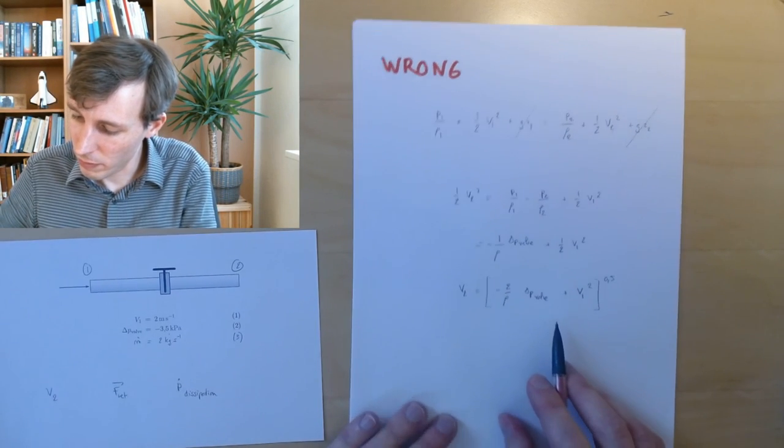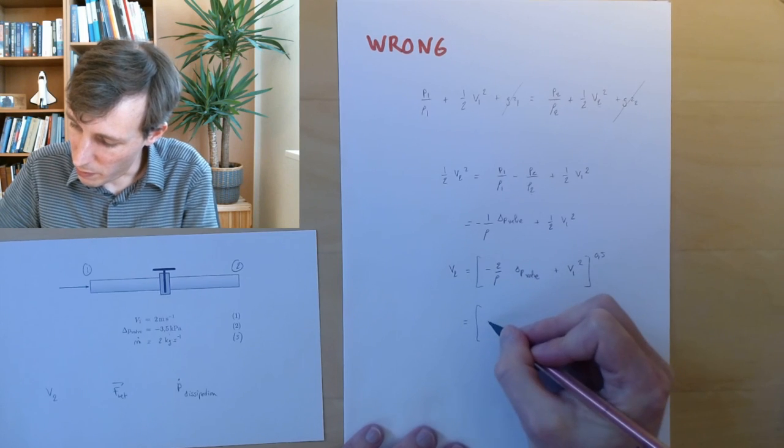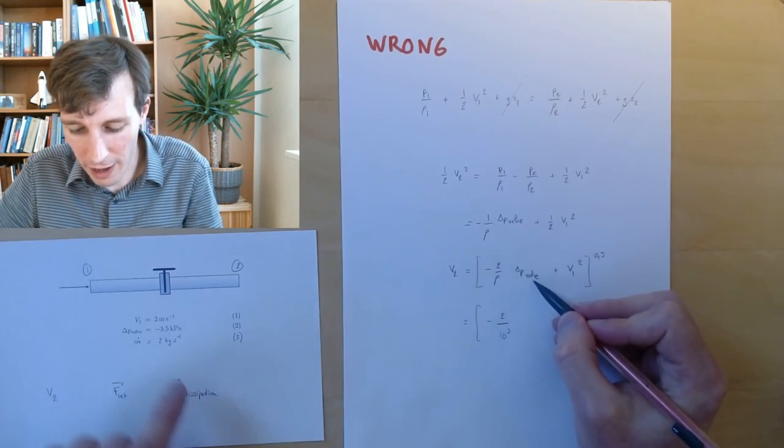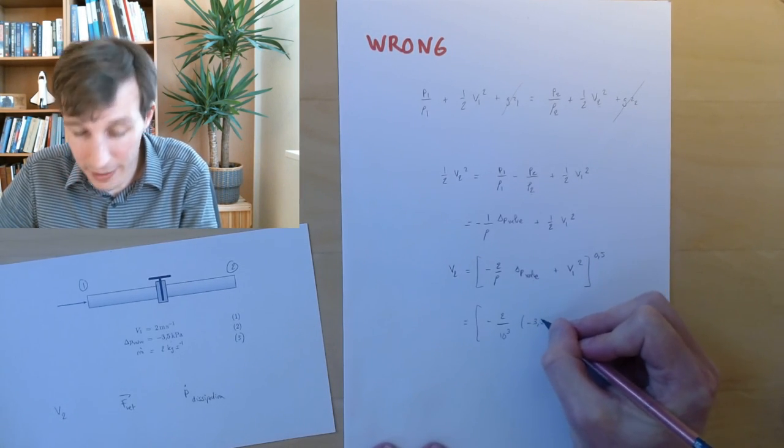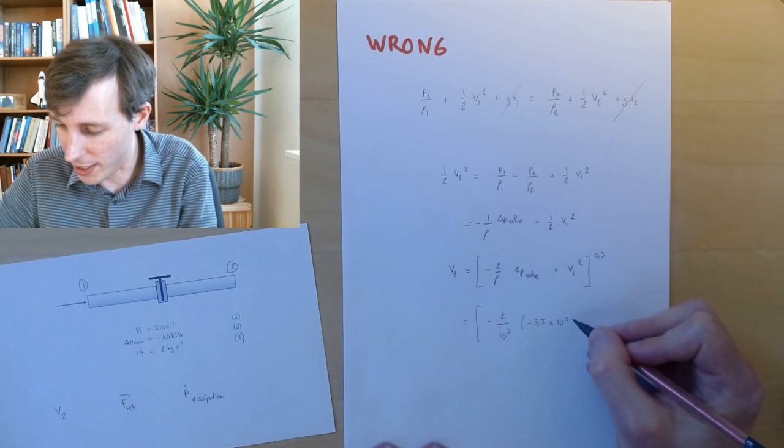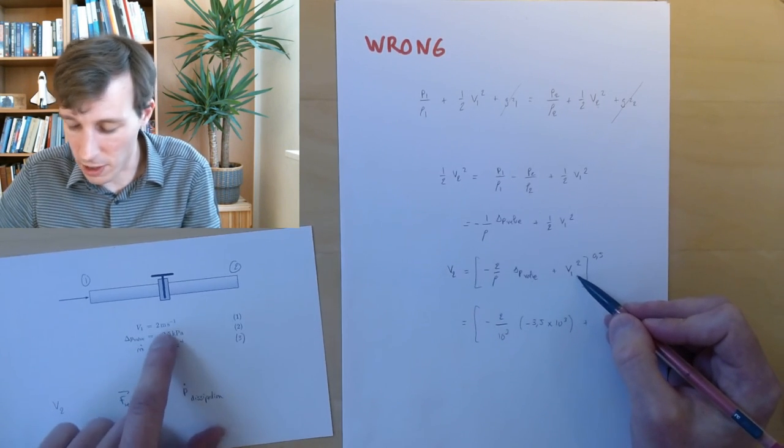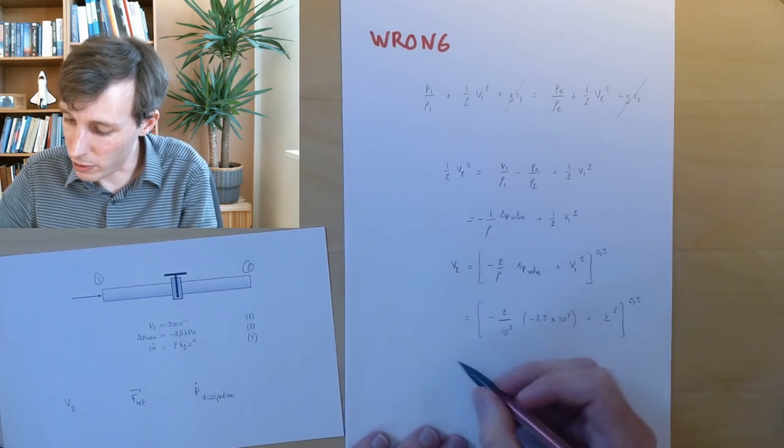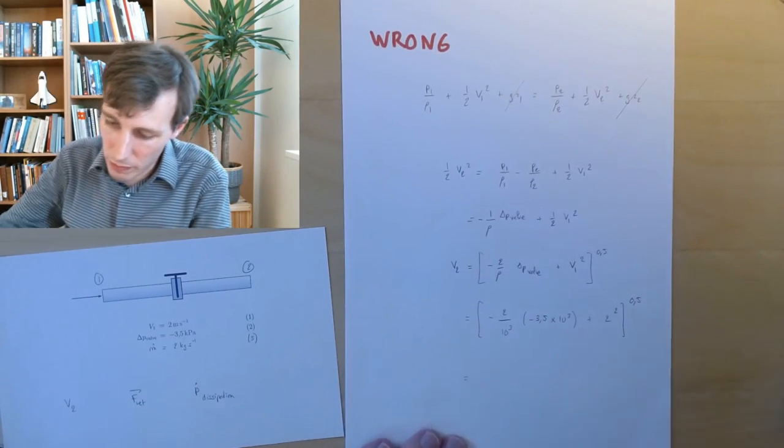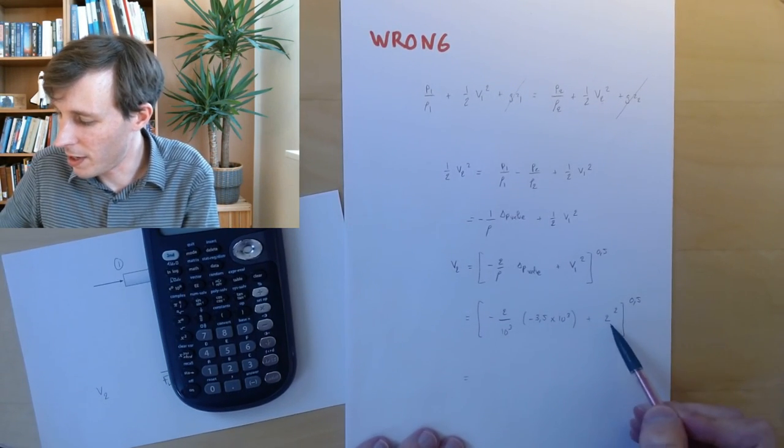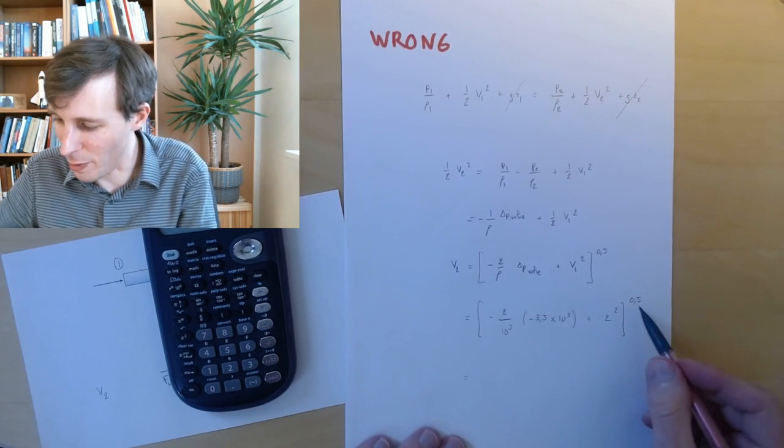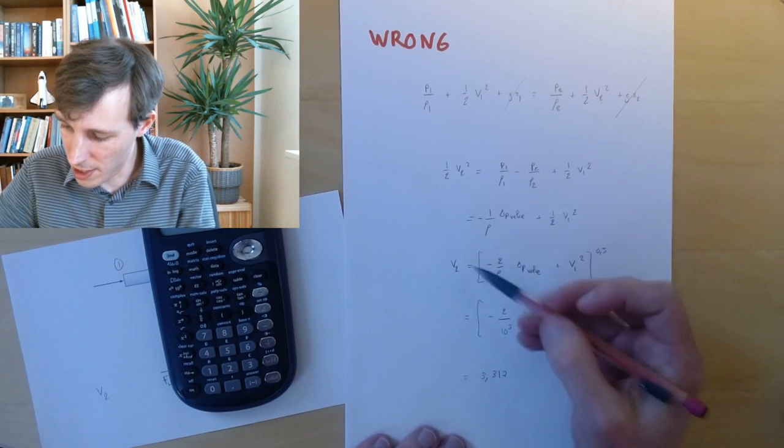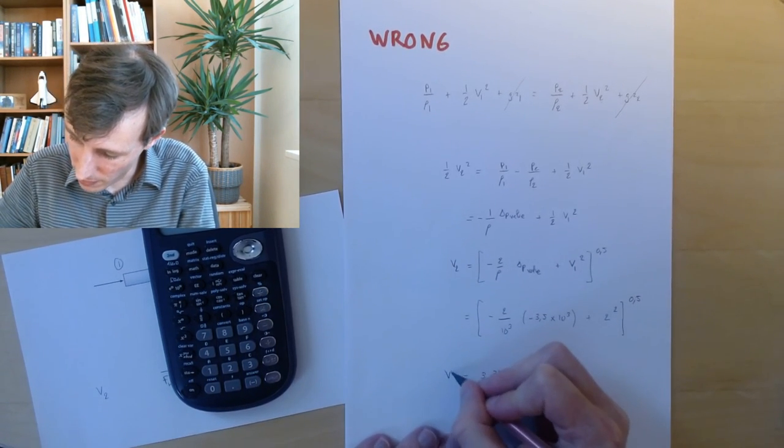Let's put numbers in. Minus 2 over density of water 1000, 10 to the power 3 kilograms per meter cubed. The delta P of the valve is minus 3.5 kilopascals, watch out for the units, times 10 to the power 3 pascals in SI units. Plus V1 squared, V1 is 2, so that's 2 to the power 2. Put all of this to the power 0.5. This works out to be 2 times 3.5 is 7, 7 plus 4 is 11, 11 to the power 0.5 turns out to be 3.317.